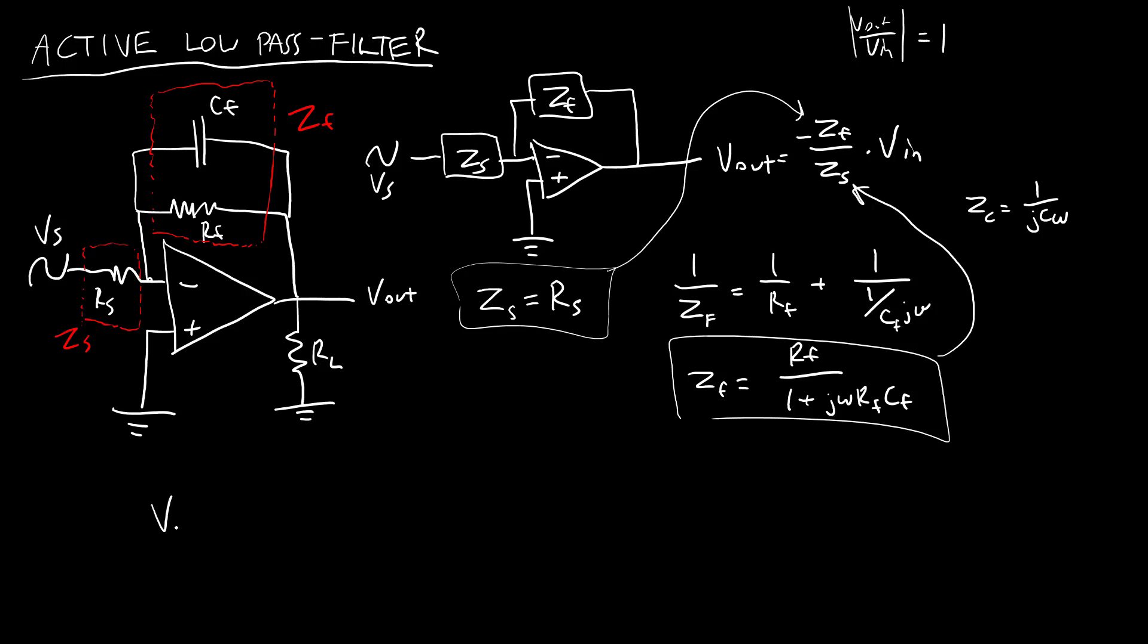and that is going to give us our final equation for the frequency response of an active low-pass filter. V out equals negative RF over RS times one over one plus J omega RF CF times VS.